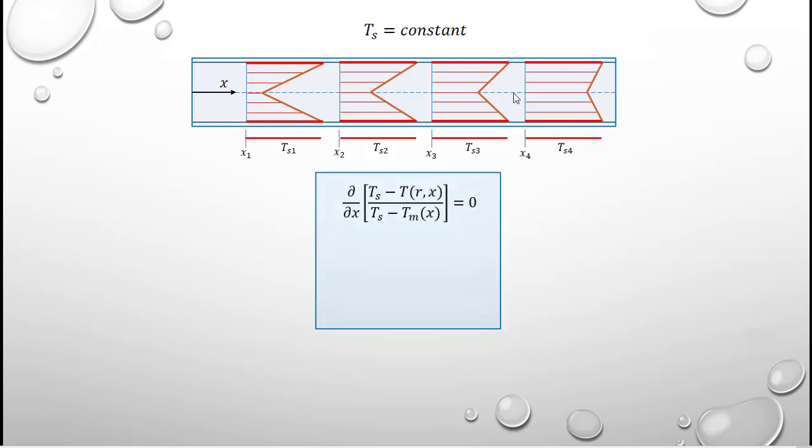Looking back at our definition of what is a thermally fully developed flow, if we worked out this derivative and utilized the fact that T_S is equal to a constant, we would end up with this expression. What we're seeing here is that the partial derivative of the local temperature with respect to X now has an R dependency.